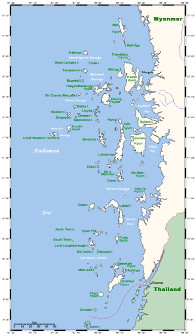An archipelago, sometimes called an island group or island chain, is a chain, cluster or collection of islands, or sometimes a sea containing a small number of scattered islands.